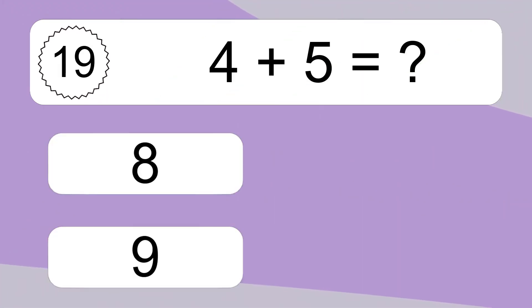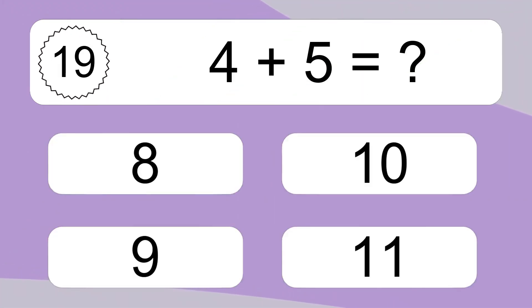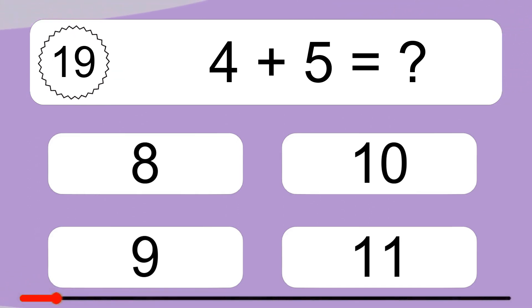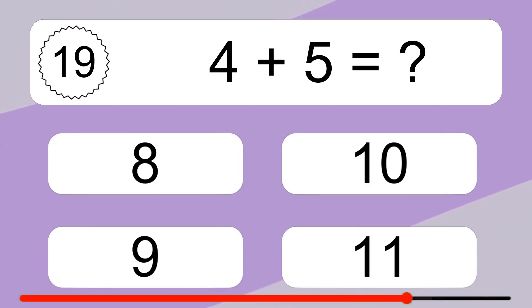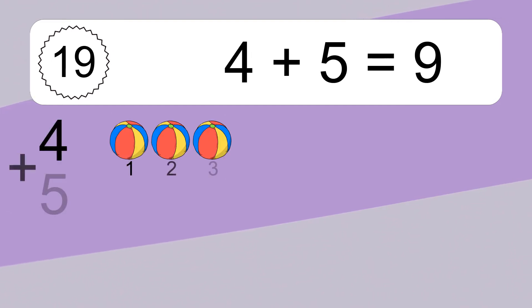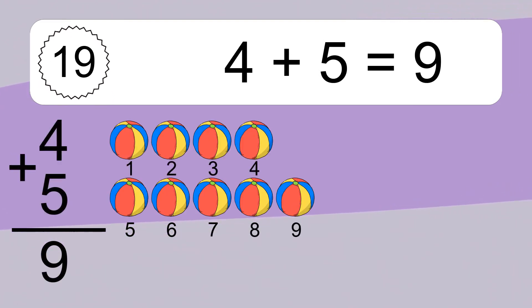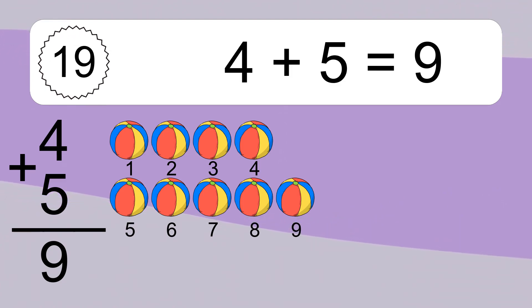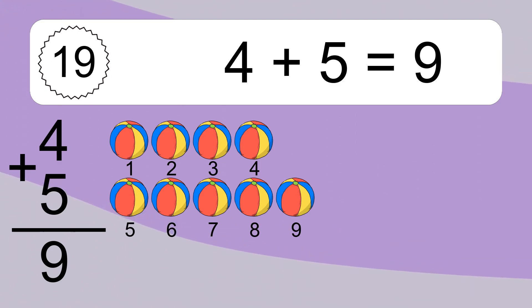4 plus 5 equals what? 4 plus 5 equals 9. Let's count it. 1, 2, 3, 4, 5, 6, 7, 8, 9.